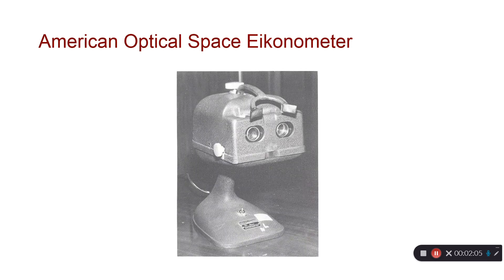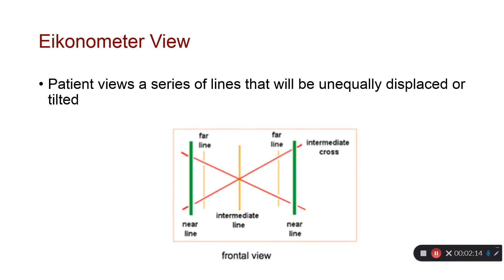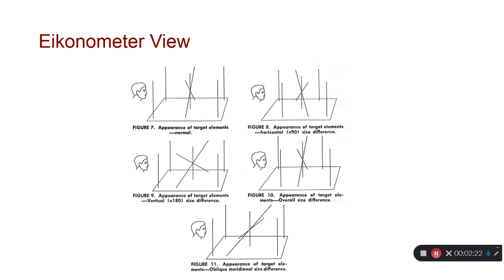Here's an eikonometer from the old days — it's so old they don't even make them anymore and you can't replace them. That's partly why we're not all that focused on this section. What happens is patients view a series of lines that are unequally displaced or tilted. As they look through the lenses, you can detect the amount of overall image size difference between the two eyes by aligning them properly.